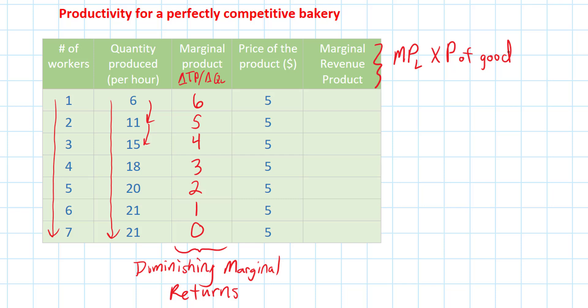We're looking at how much output each worker produced and how much we could sell that output for. The first worker produced six loaves of bread, which the bakery could sell for five dollars per loaf, earning thirty dollars in revenues. The second worker contributed five loaves — multiplied by five dollars — for a marginal revenue product of twenty-five dollars. We'll calculate the marginal revenue products for each worker down to the seventh.